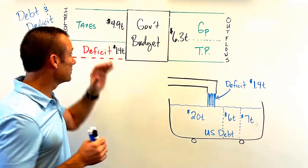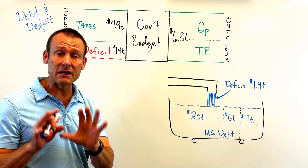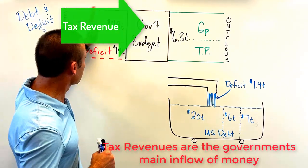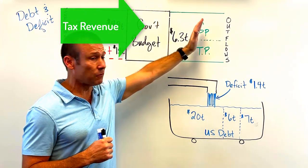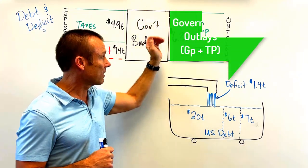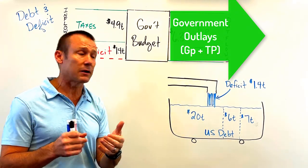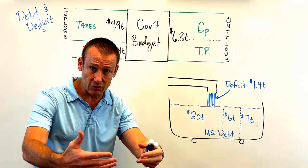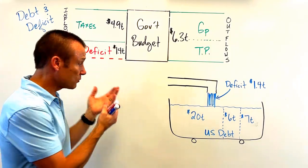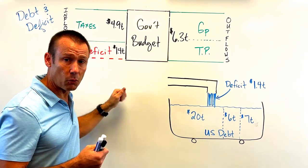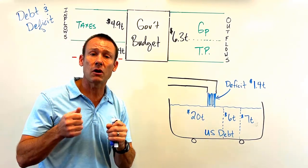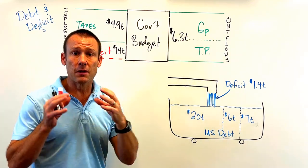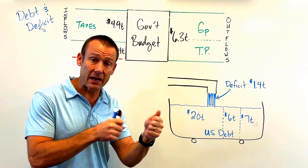Like all budgets, we've got inflows and the main inflow to the government is of course taxes — that's the money flowing in. And we've got outflows, or expenditures. Two major types of outflows: government purchases — that's the buying of goods and services, like this whiteboard in a government building, or the payment of a teacher's salary because they're providing a service.